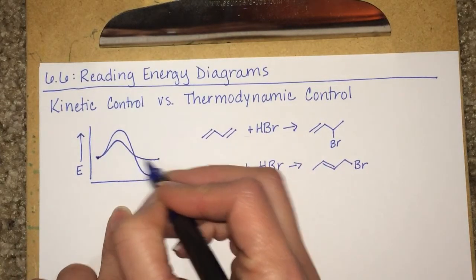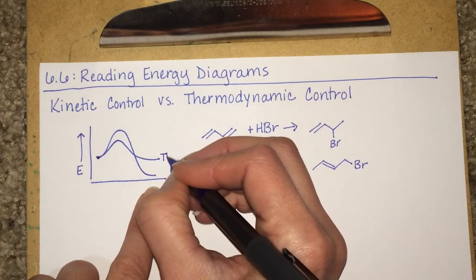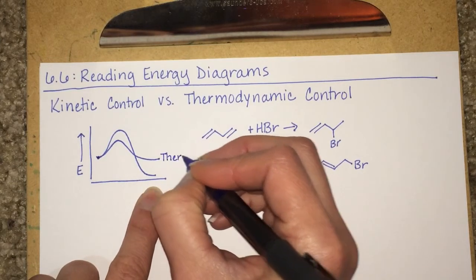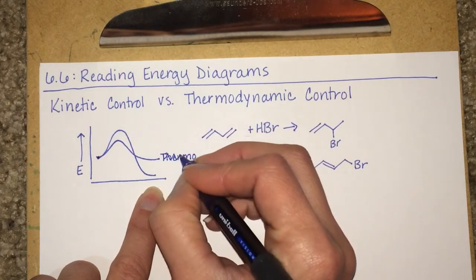This graph that starts and stops at about the same time, is an example of a reaction that's under kinetic control.